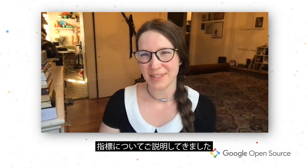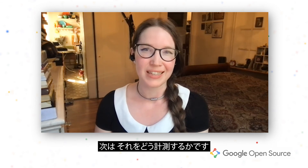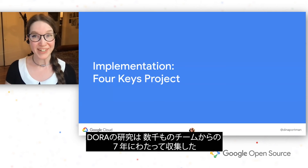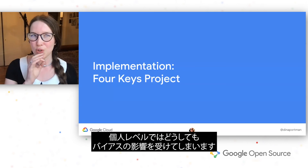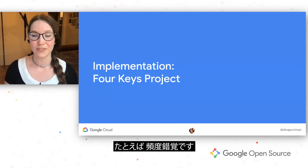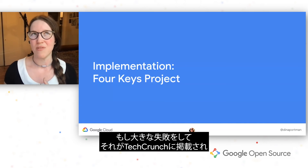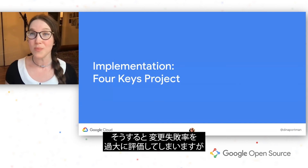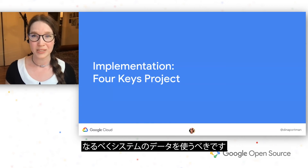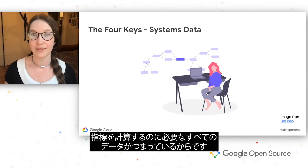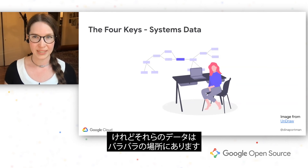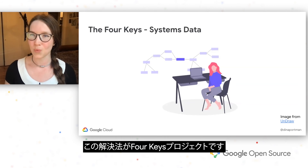Thank you, Sophia. Now that we know about the metrics and what we want to do with them, we need to start thinking about how do we measure them. The DORA research used surveys, which is great if you have seven years and thousands of teams and a lot of data points. However, if it's just you, you are subject to bias — for instance, you might be suffering from recency bias. If you just had a really big failure that was in TechCrunch and everybody's talking about it, you might have an outsized idea of your change failure rate that is not reflected in the system's data. So whenever possible, we want to use systems data because you have all of the data that you need to calculate these metrics.